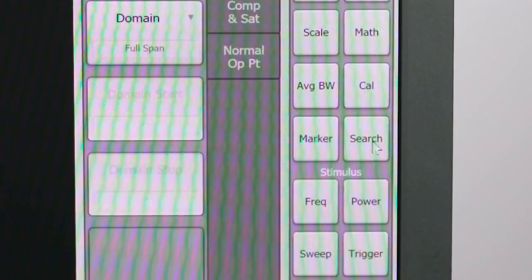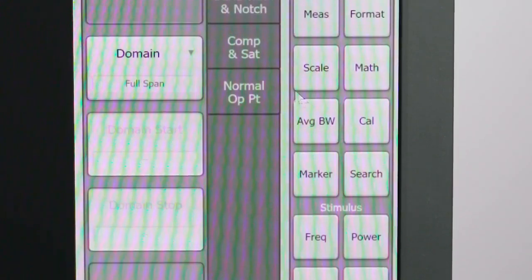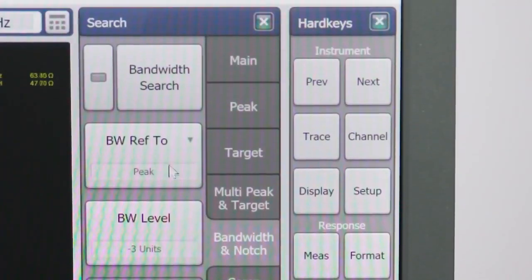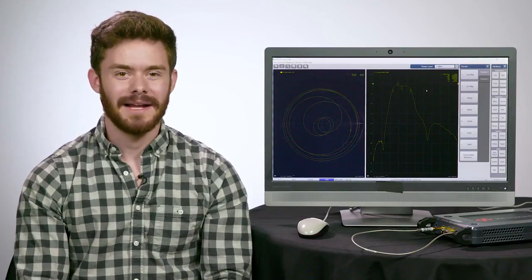We can also easily analyze the bandwidth of this bandpass filter we're testing by pressing Select and Bandwidth and Notch. Just press Bandwidth Search to analyze the bandwidth.